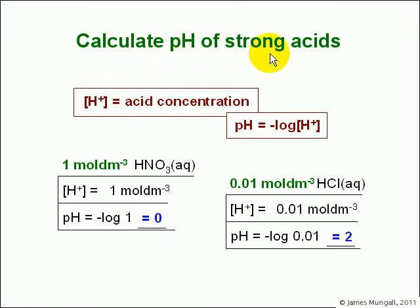So calculating pH of strong acids, essentially we say that the H plus concentration is the same as the acid concentration, and then work out the pH by doing minus log of that acid concentration. So if we have one mole per decimeter cubed HNO3, we'd say the H plus concentration is one mole per decimeter cubed, therefore the pH is minus log of one, which is zero.